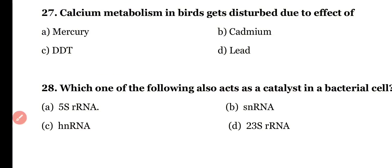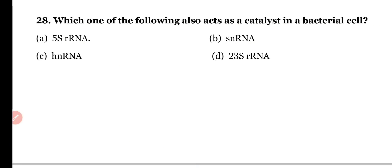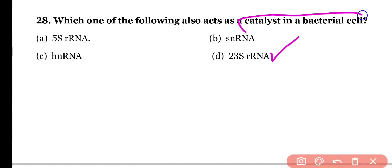Question number twenty-eight: which of the following also acts as a catalyst in a bacterial cell — (a) 5S ribosomal RNA, (b) snRNA, (c) hnRNA, or (d) 23S ribosomal RNA? The correct answer is option D — 23S ribosomal RNA acts as a catalyst in prokaryotic bacterial cells.